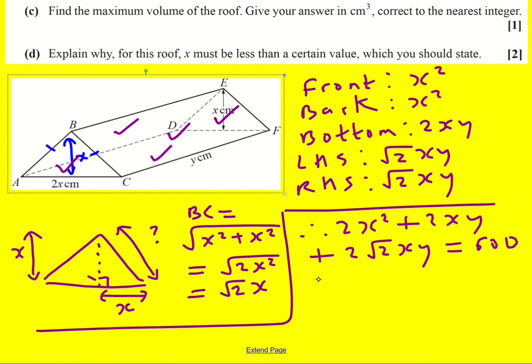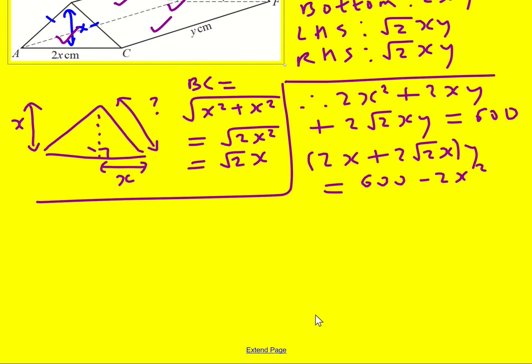So I'm going to rewrite it. I can factorize the Y out of these two. It's going to become 2X plus 2 root 2X times Y equals 600 minus 2X squared. I've done a few things with that. I've minus 2X squared from both sides and then I factorized. Therefore Y is going to equal 600 minus 2X squared all over 2X plus 2 root 2X.